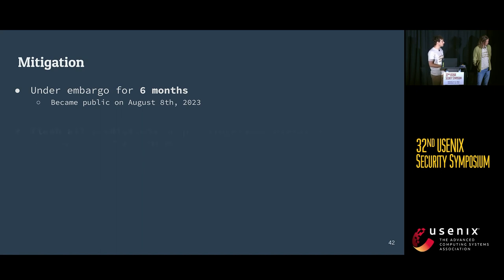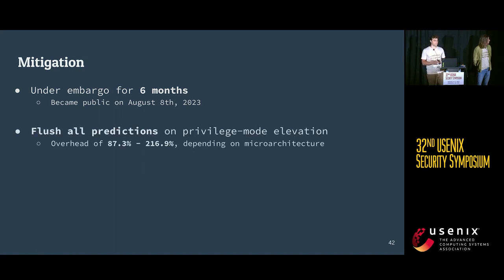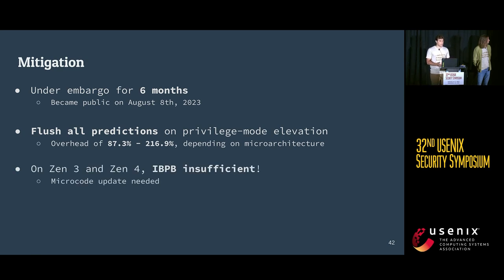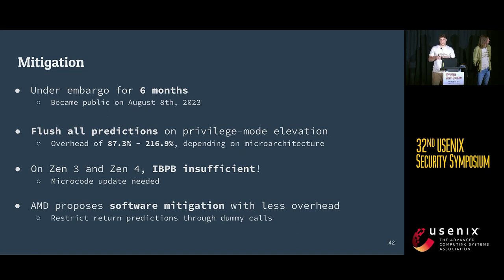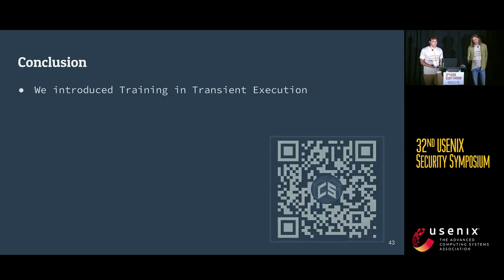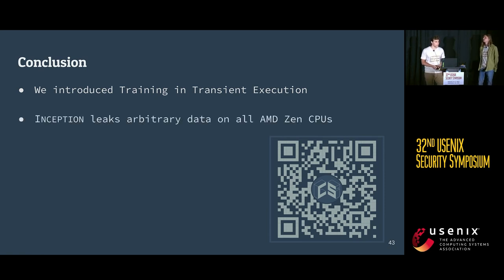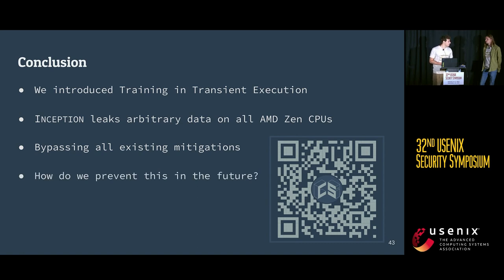This issue was under embargo for around six months. Our analysis shows that mitigating Inception requires flushing the entire branch predictor state upon privilege elevation, which comes with very high overhead. Zen 3 and Zen 4 lacked proper hardware support for this, so AMD released microcode updates to enable it. Alternatively, AMD has a software mitigation in the Linux kernel that only executes a return after pushing a dummy value onto the return stack. In conclusion, we introduced training in transient execution and built this end-to-end exploit Inception, which leaks arbitrary data on all AMD CPUs in the presence of both hardware and software mitigations. It has been five years since the discovery of Spectre and we're still dealing with this issue. We call for vendors such as AMD to incentivize research on their products and be more transparent about the type of speculation they perform. Thank you.